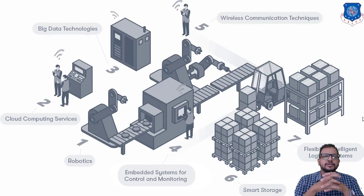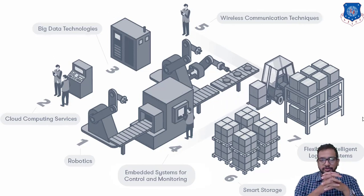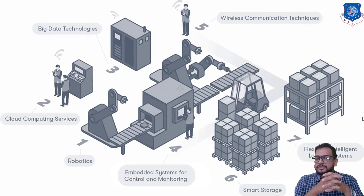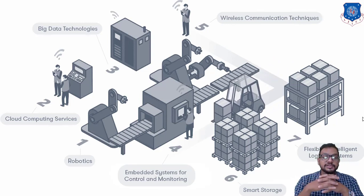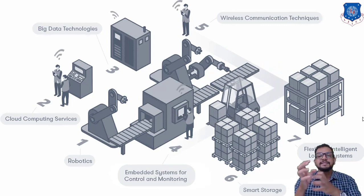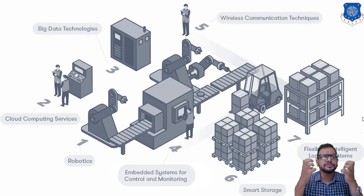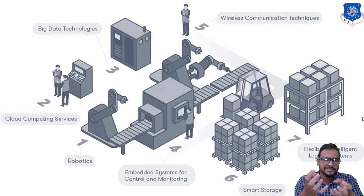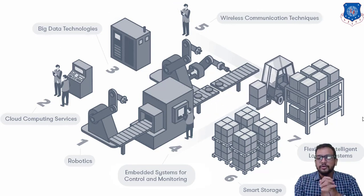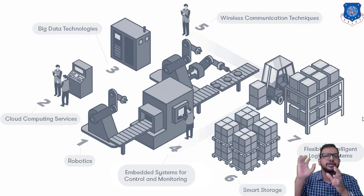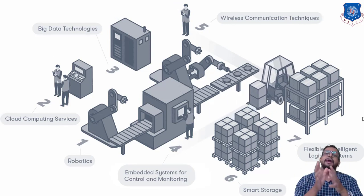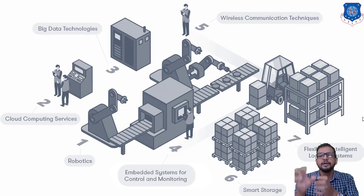This shows the entire physical system connected with the cyber world via the internet. The various components are: number one — a robotic arm; number two — a cloud computing service; number three — big data technologies; number four — an embedded system for controlling and monitoring; number five — a wireless communication technique, where a person from any location can directly access this system; number six — smart storage; and number seven — a flexible and intelligent logistic system.